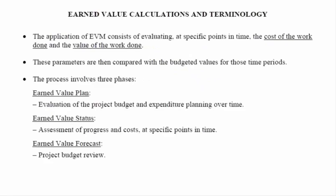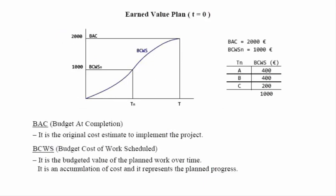Let's look now at the implementation of the earned value methodology. The application of this methodology involves three phases: the earned value plan, the earned value status, and the earned value forecast. We are going to illustrate these steps with a simple example. The example involves a project with some activities, but up to a certain point in time TN, it is supposed to implement three activities A, B, and C. The first phase is the earned value plan, which must be ready before the project starts at time equals zero.